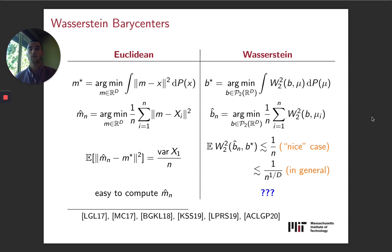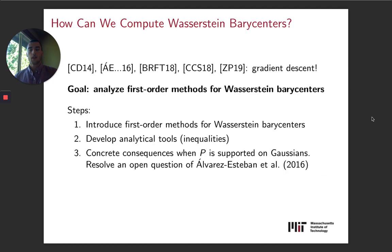In this work, the piece of this table that we're interested in is this last one, which is computability. How can we actually compute the Wasserstein barycenter? Obviously the empirical mean is very easy to compute in Euclidean space. But in Wasserstein space, it's not so obvious what to do. The suggestion from previous work is to use gradient descent. And so in our work, what we want to do is analyze gradient descent or stochastic gradient descent methods for Wasserstein barycenters. The way we're going to do this is by first introducing these methods,